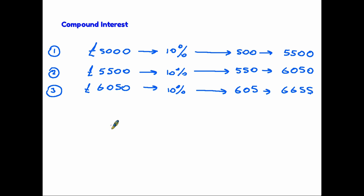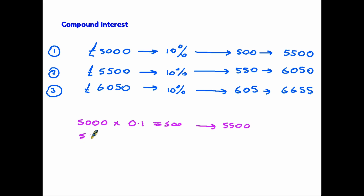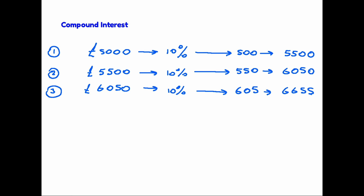Now I'm going to look at a couple of ways you could do this. Using the decimal method: start with five thousand, multiply by 0.1 to find ten percent — that gives 500 — then add it on to get five thousand five hundred. Then take five thousand five hundred and multiply by 0.1 again to get 550, and so on. You start with the original amount, use the decimal method, multiply by 0.1, take your answer, multiply by 0.1 again, and continue for as many years as needed. That method is perfectly valid and you will not go wrong.